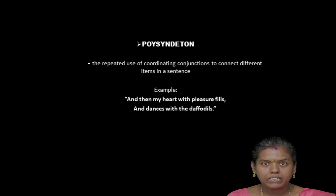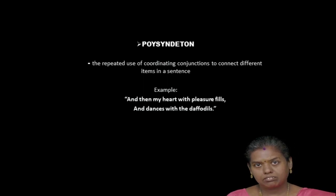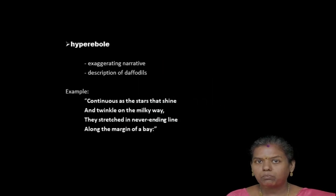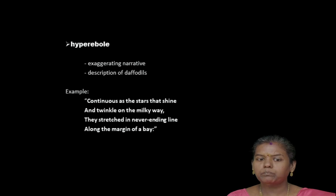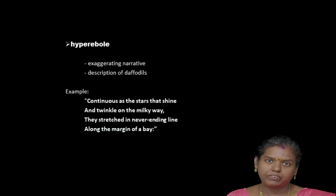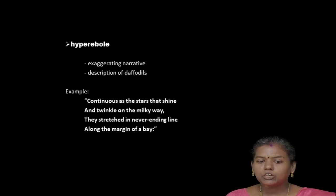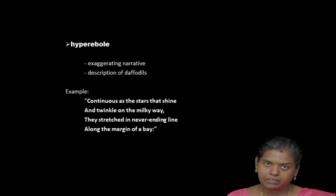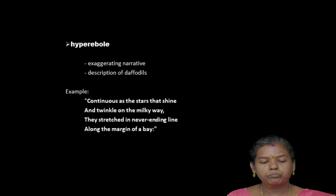We also have hyperbole — an exaggerating narrative. The description of daffodils is done in a very exaggerated manner: 'Continuous as the stars that shine and twinkle on the Milky Way, they stretched a never-ending line along the margin of the bay.' Everything is given in a very exaggerated, high tone. So I hope you enjoyed the poem — thank you, students.